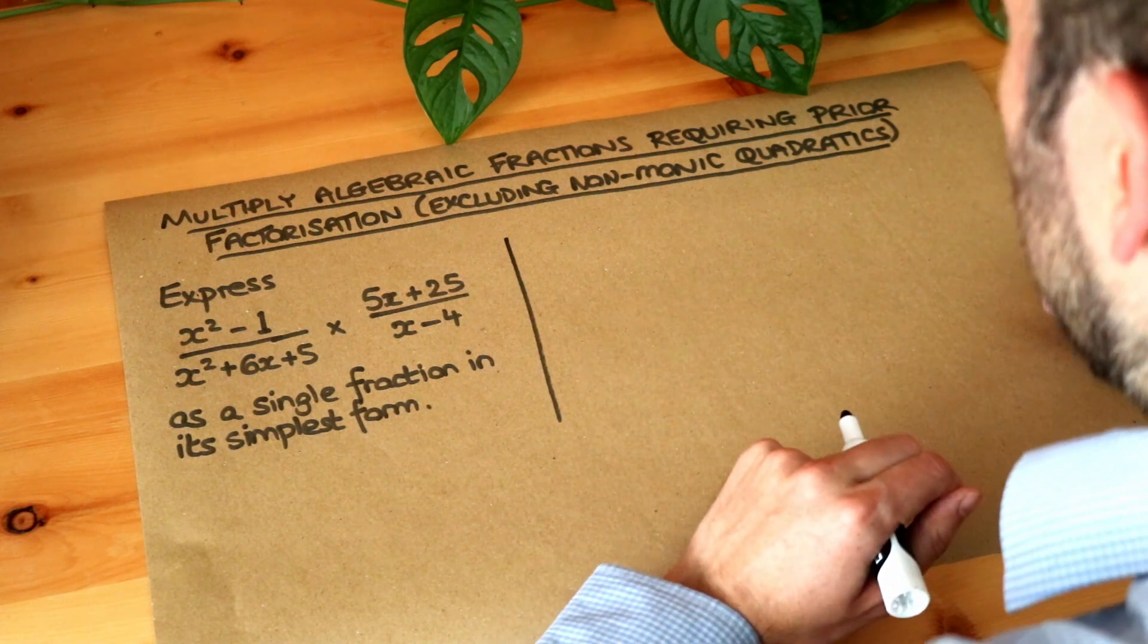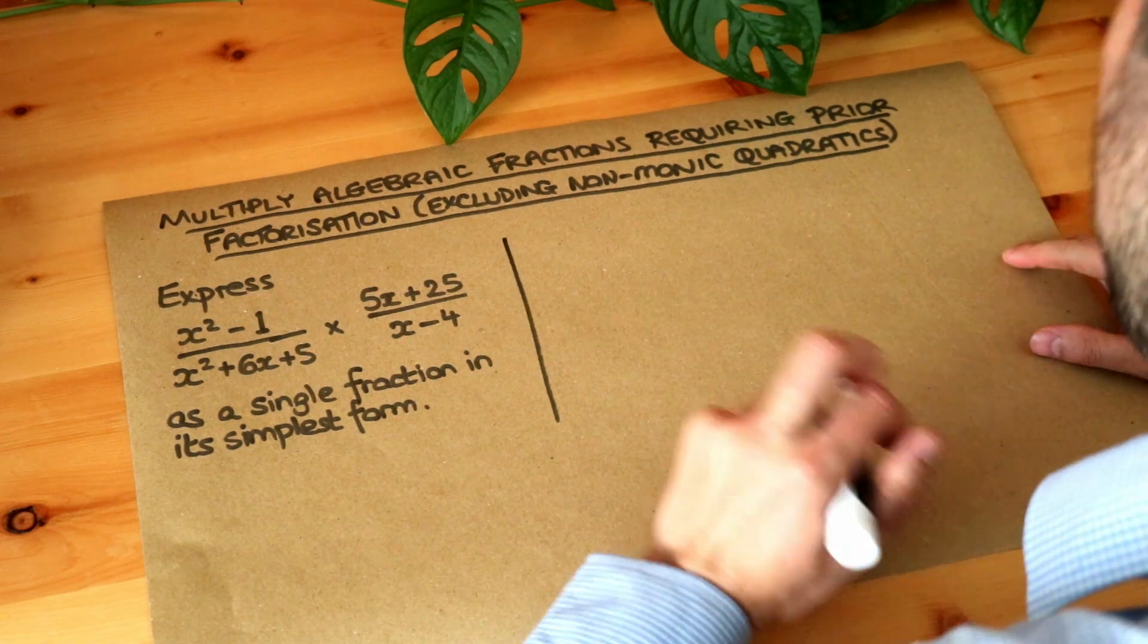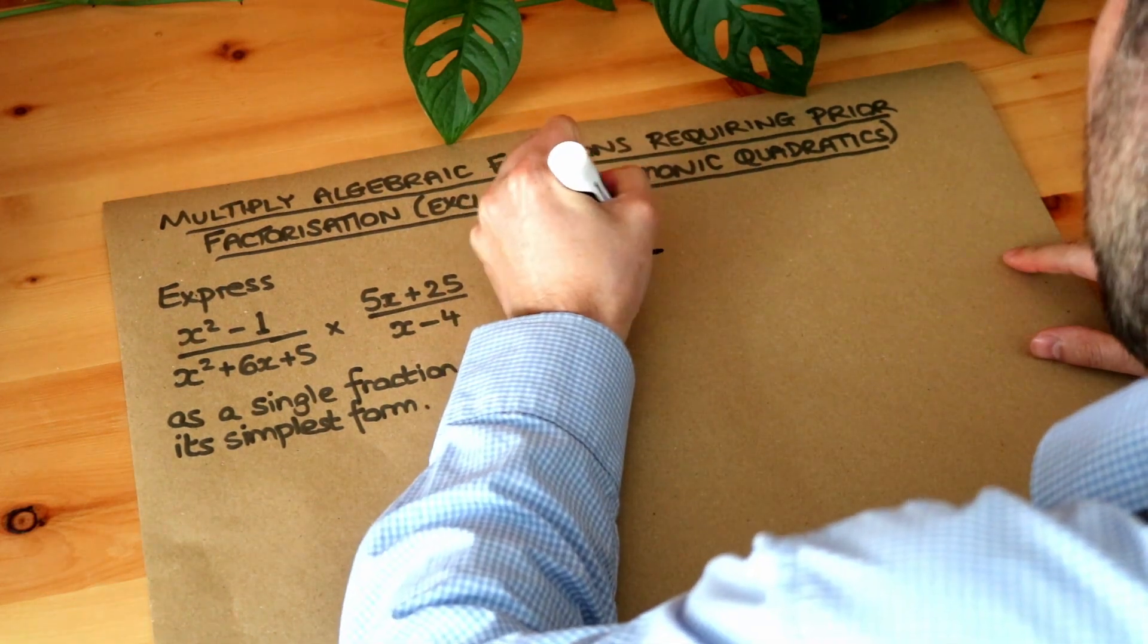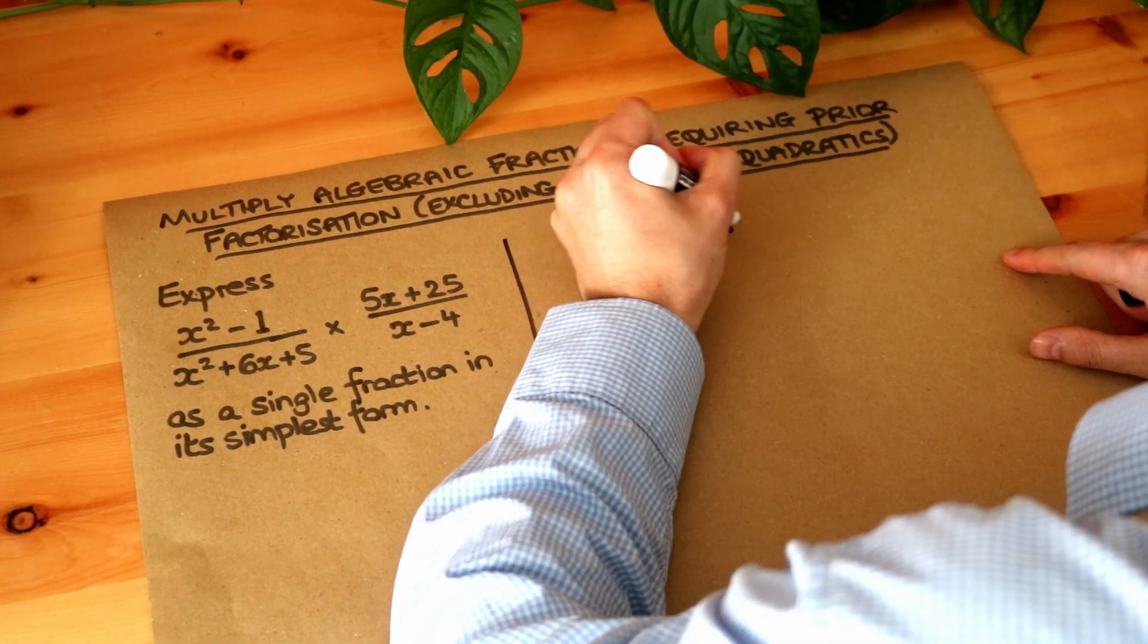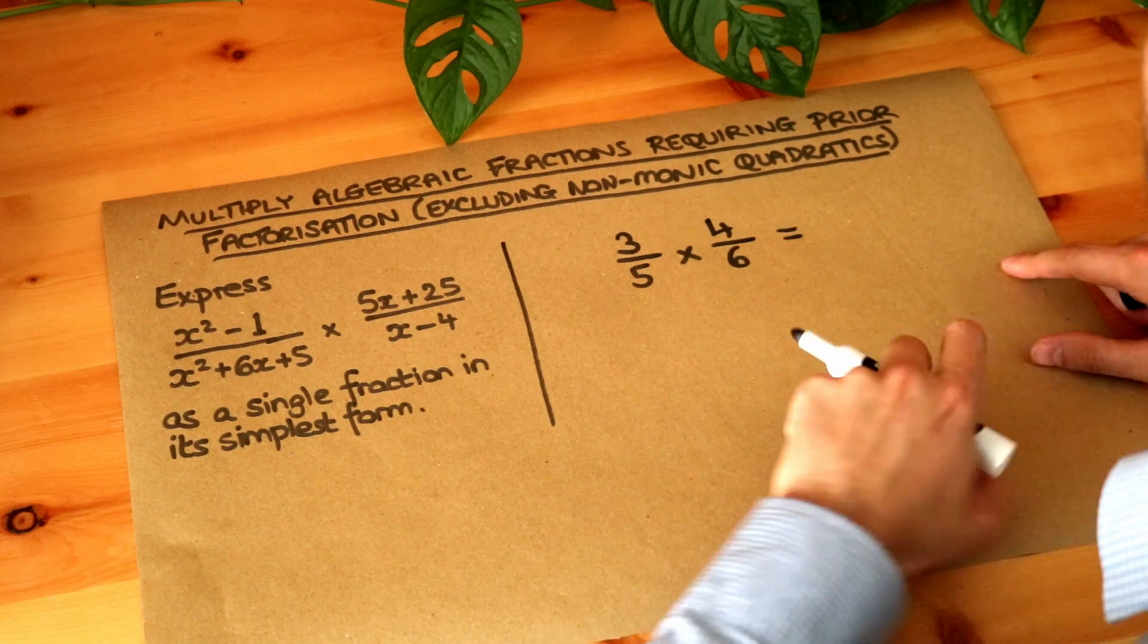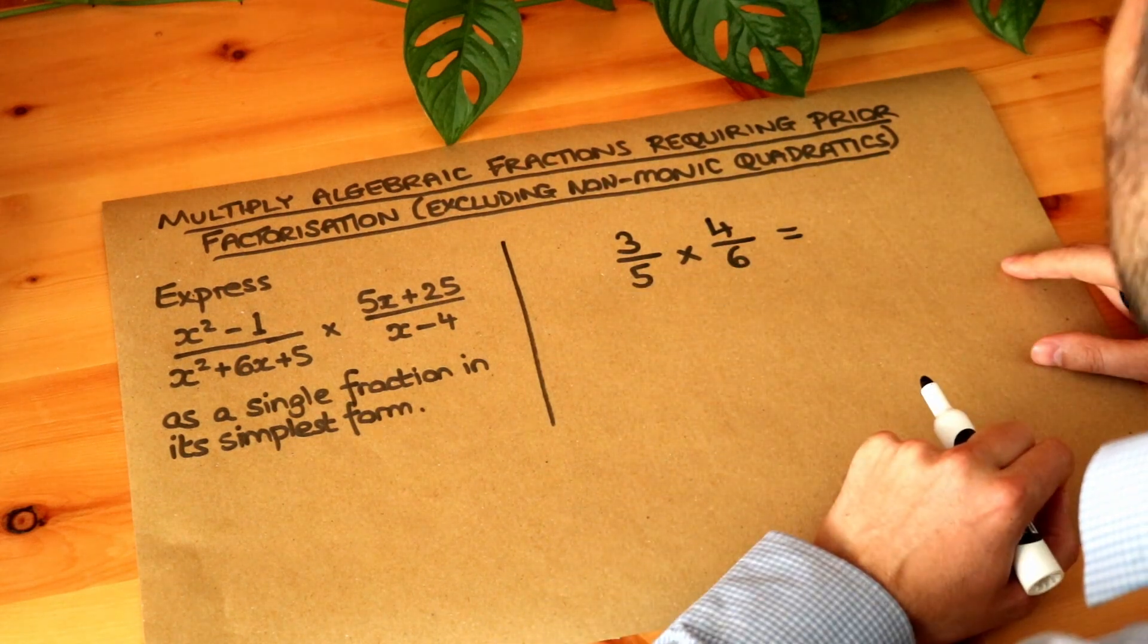Now let's just remind ourselves how we multiply fractions together. Let's say that we had 3 over 5 multiplied by 4 over 6. Now you might remember that we can just multiply the numerators together and we can multiply the denominators together.